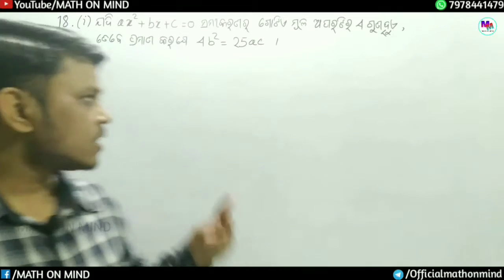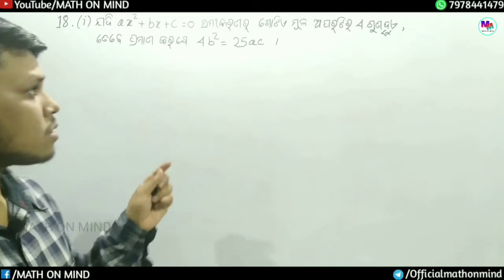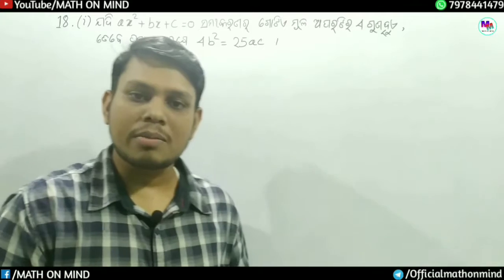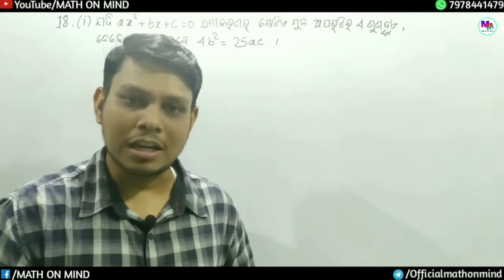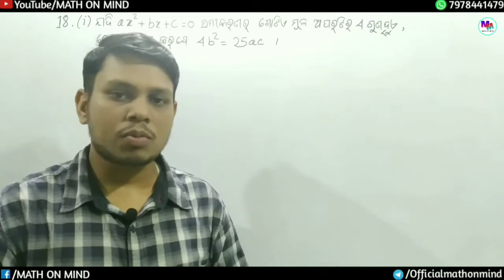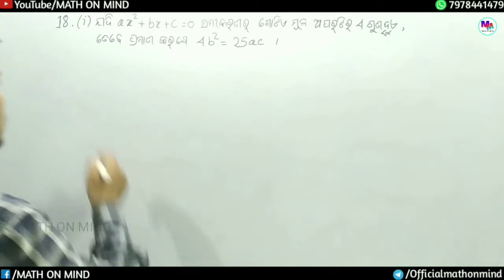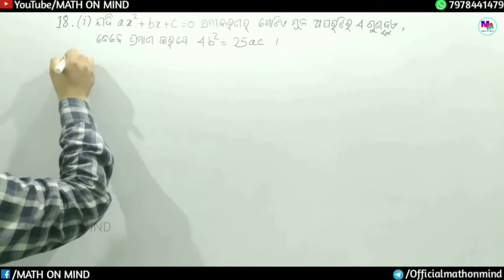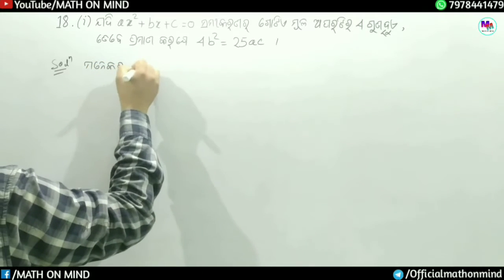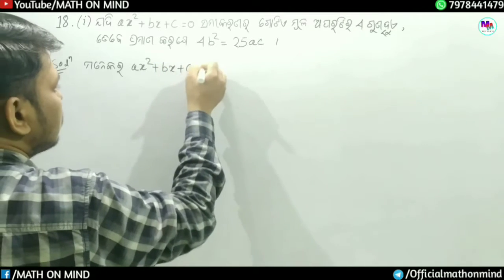The problem is: if a square plus bx plus c equal to zero, and one root is 4 times the other root, we need to prove something. Let alpha be the first root.